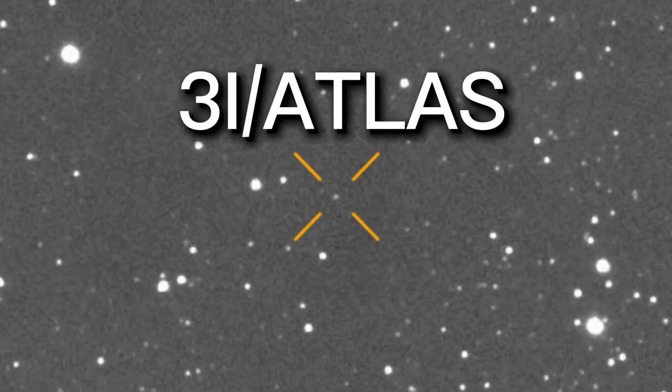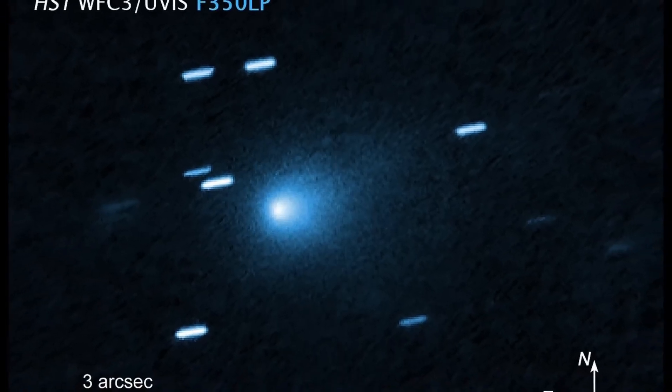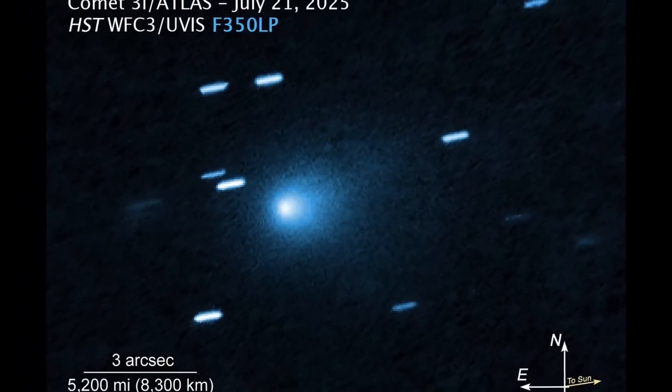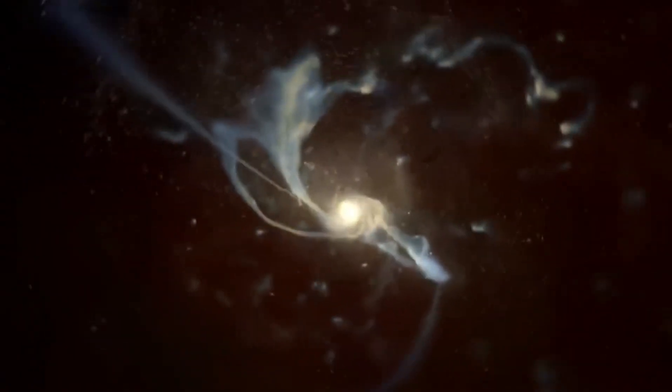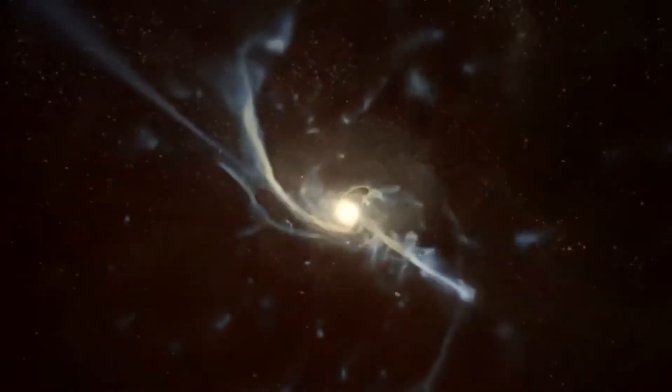Officially, it's catalogued as 3I Atlas, a supposed interstellar comet. But what if it isn't? What if it's not a comet at all, but a vessel? An alien craft camouflaged in ice and dust, silently crossing our solar system with unknown intentions.